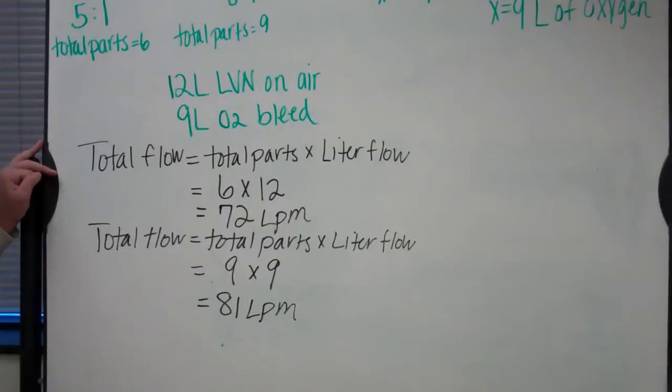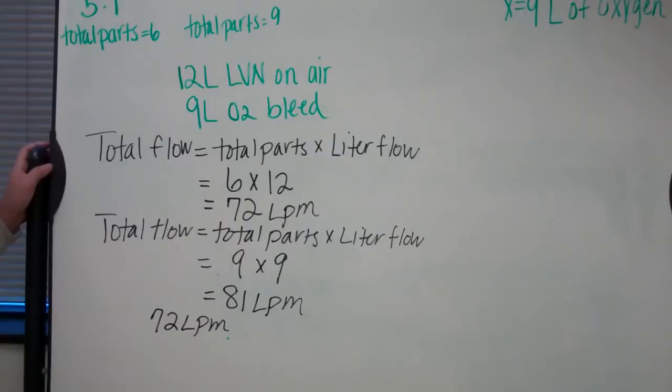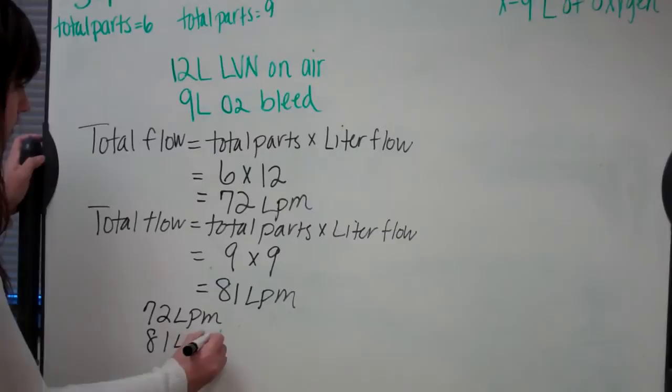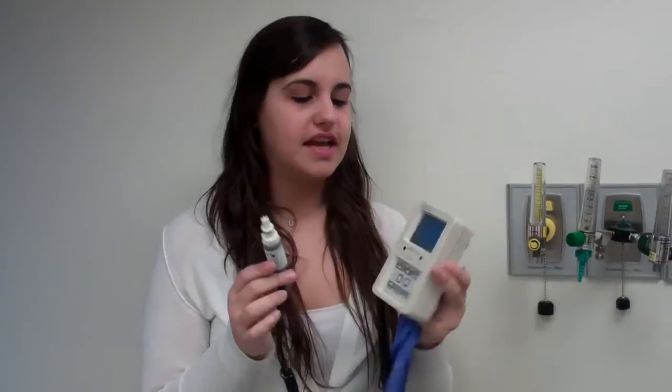Now to make sure that it meets patient demand, you take the total flow of the 12 liters, which was 72, you take the total flow of the 30%, which was 81, you add those together. 153 liters per minute is our total flow to the patient, which more than exceeds 60 liters per minute, so therefore our equations are correct.